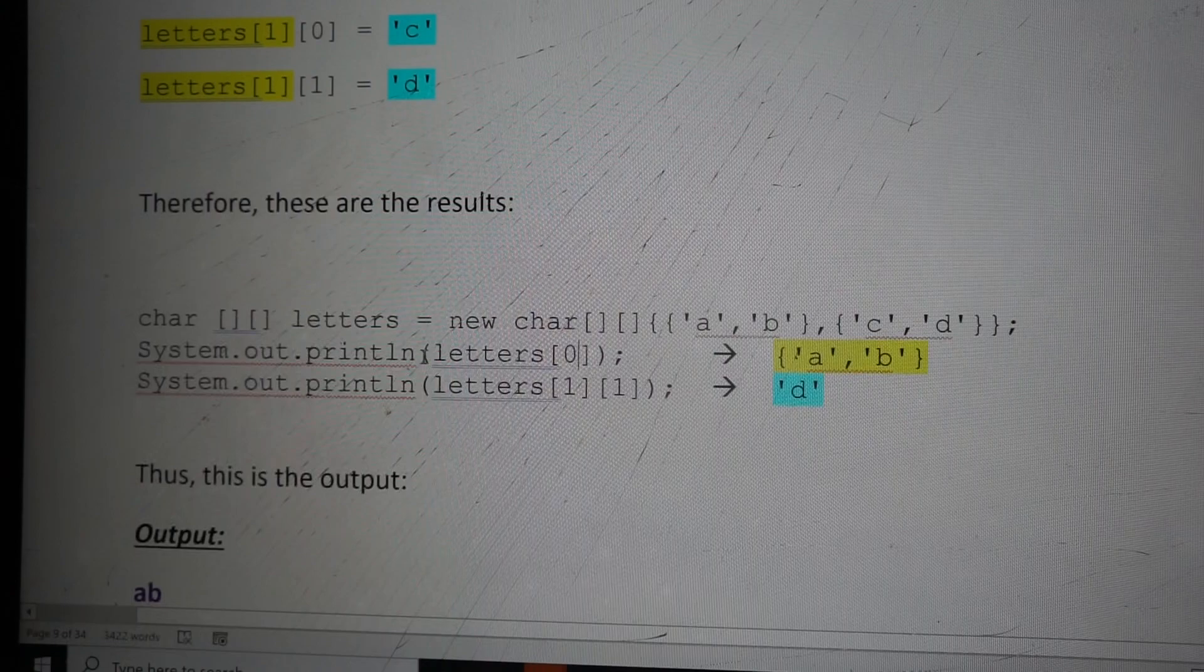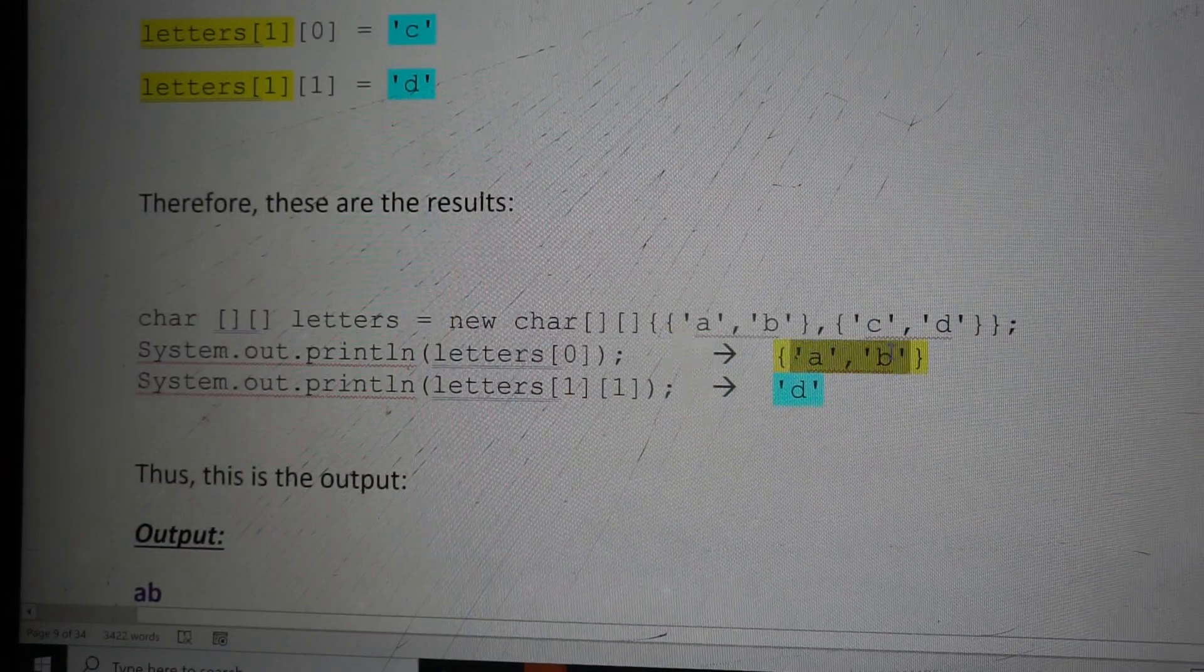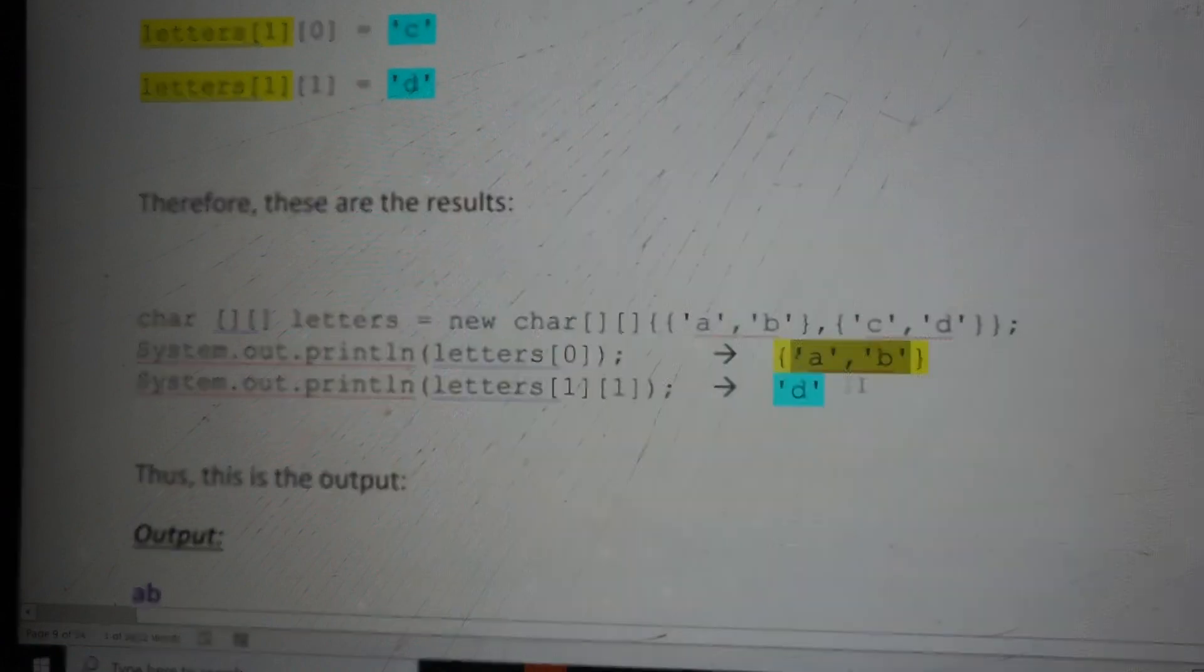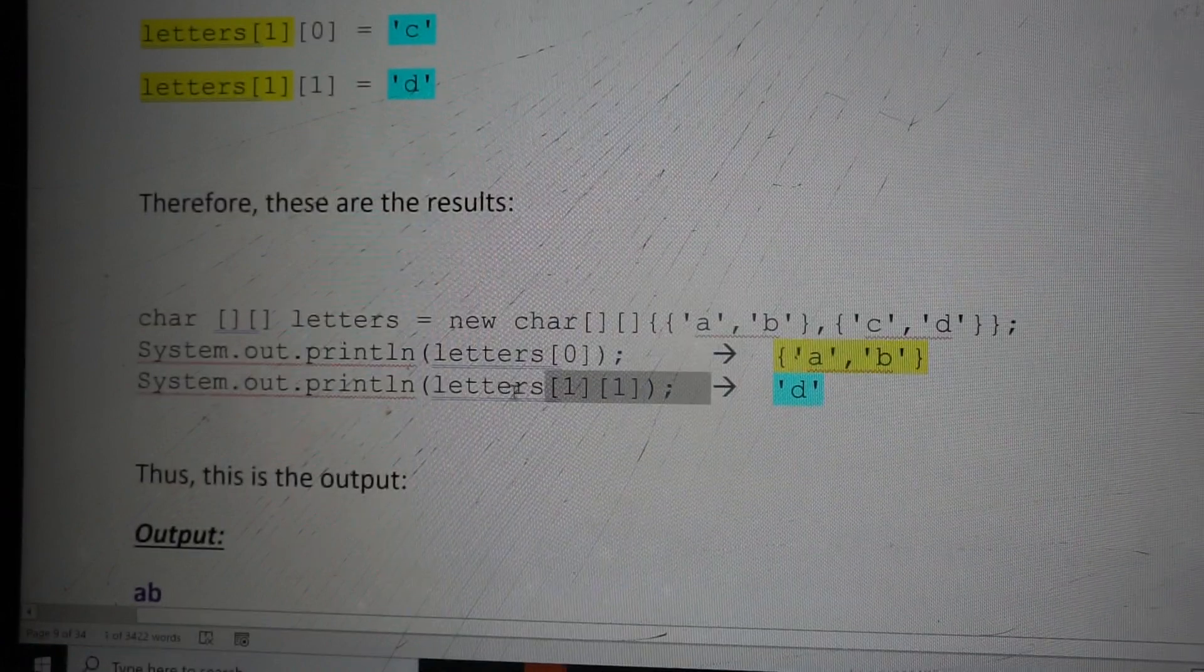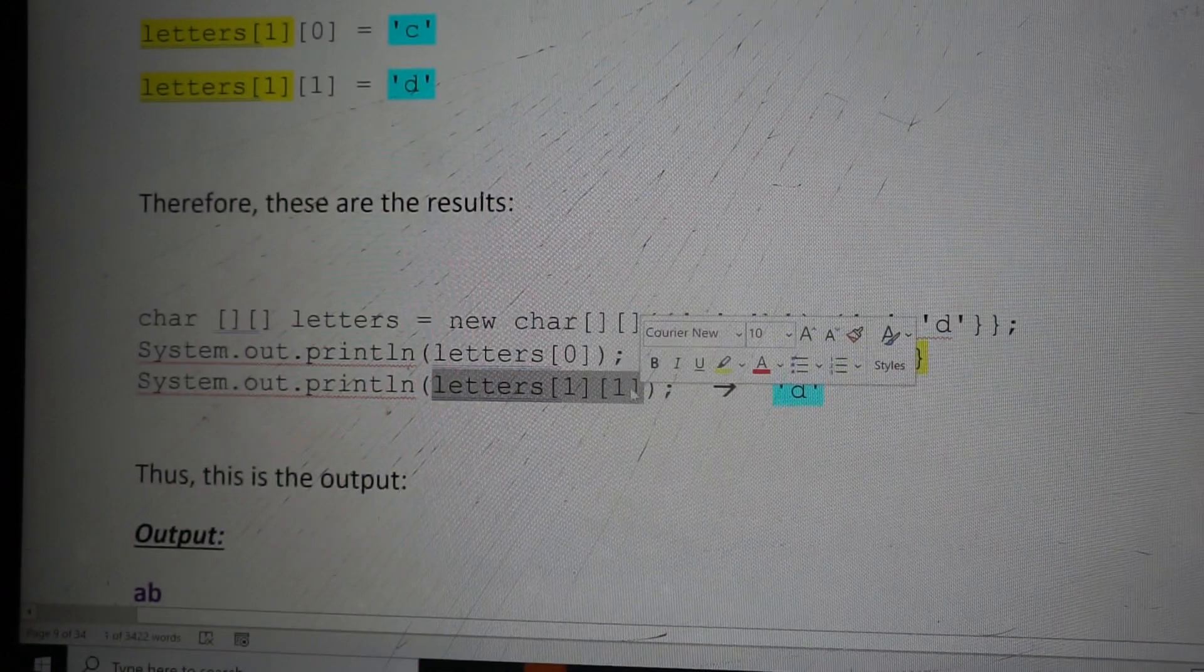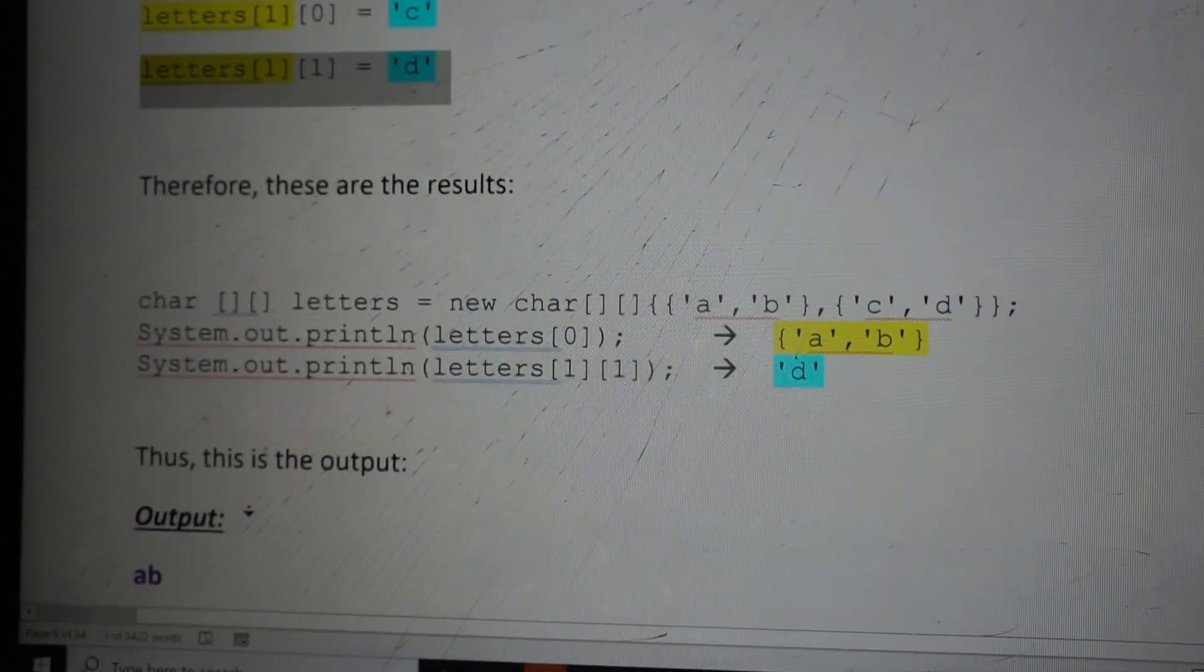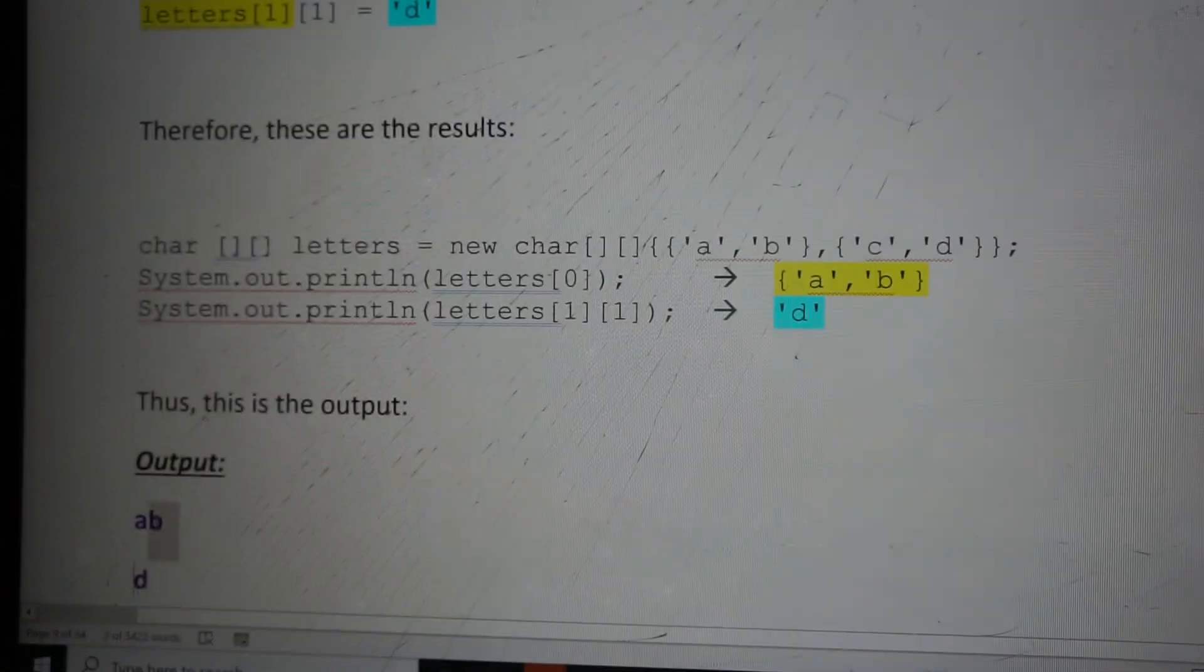So all together, this will give us the reference to the other 1D array and all the elements inside it, A and B. But if we want to get a specific element inside this 2D array, we do letters[1][1], and we'll get the D. So when you print it out, you will get A, B, and D.